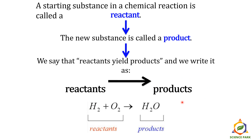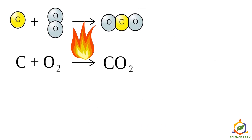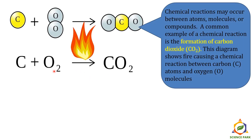Here is a very simple reaction: burning of wood. Whenever a wood log burns, the carbon from the lignin of the wood reacts with oxygen to form carbon dioxide — we call this burning. This is a chemical reaction. Chemical reactions may occur between atoms, molecules, or compounds. A common example of a chemical reaction is the formation of carbon dioxide.